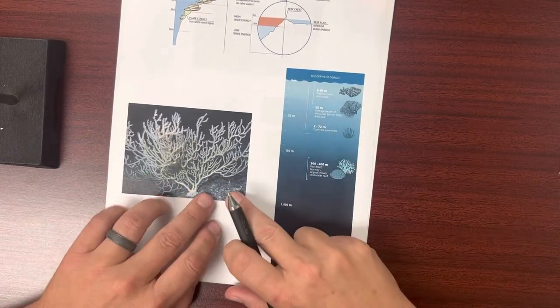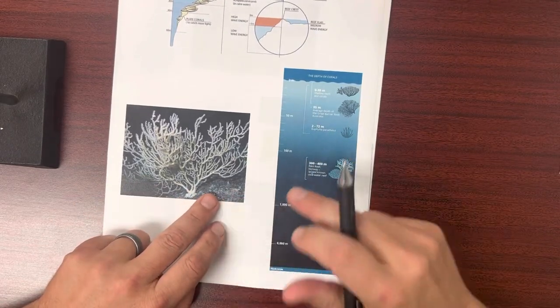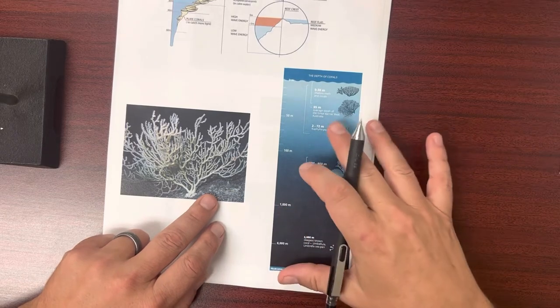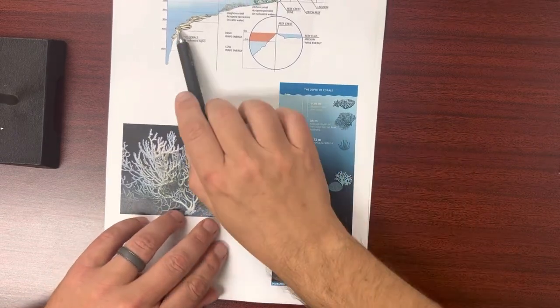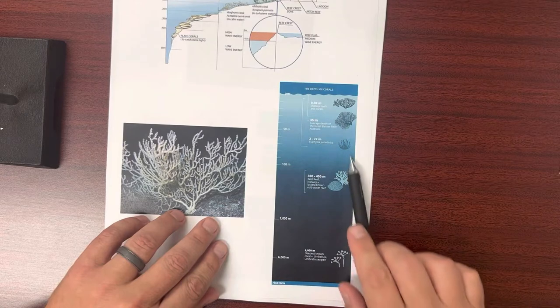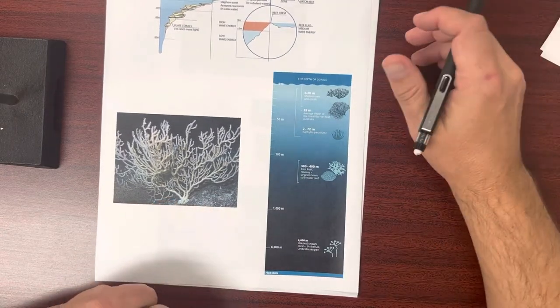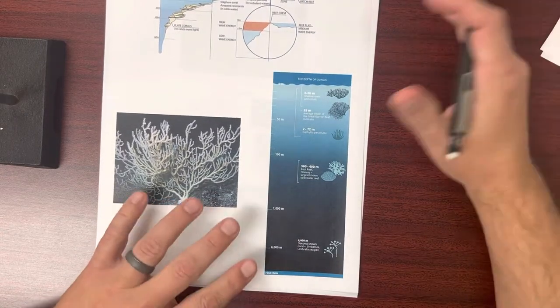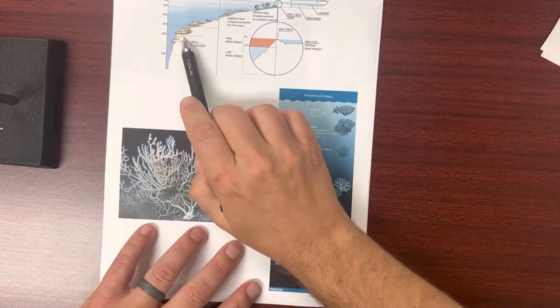They don't have a lot of color to them. They don't need a lot of color because that color is associated with photosynthesis. We're going to find out that these deep corals are getting their nutrients from other sources.